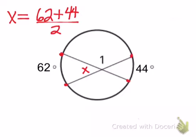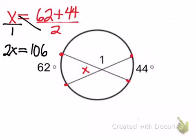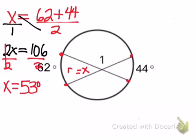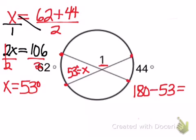To work it out, I want to set it up as a proportion. When I cross multiply, that gives me 2x equals 62 plus 44, which is 106. To solve for x, I use the division property of equality and divide both sides by 2, so x equals 53 degrees. Now x is this acute angle, and that's not the angle I'm looking for — I want the obtuse angle. The acute and obtuse angles form a line, so to find angle one I take 180 degrees and subtract 53, giving me 127 degrees. That is an obtuse angle, so the answer is reasonable.